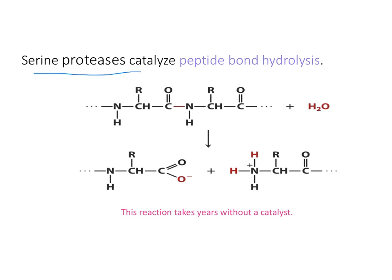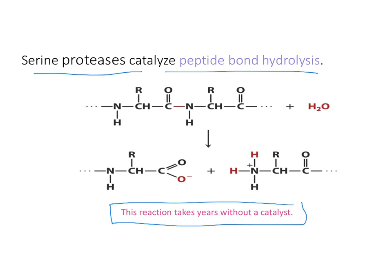Serine proteases are the enzymes that catalyze peptide bond hydrolysis. The cleavage of this bond takes years without a catalyst, but when you add a serine protease like chymotrypsin, the reaction proceeds at a biologically acceptable rate so that you can eat a protein, it gets broken down in your stomach, and eventually broken down into individual amino acids that can pass into your bloodstream.